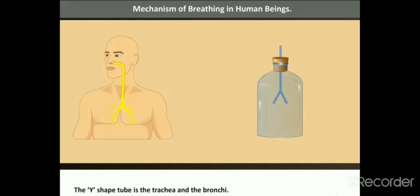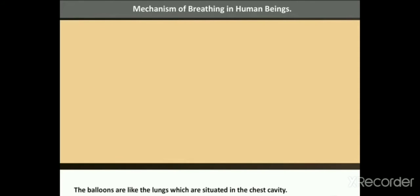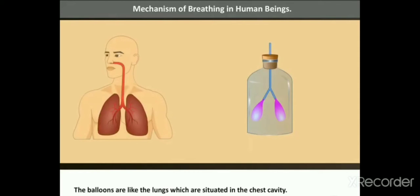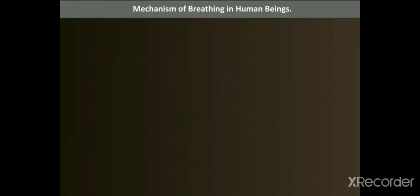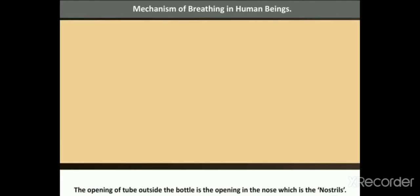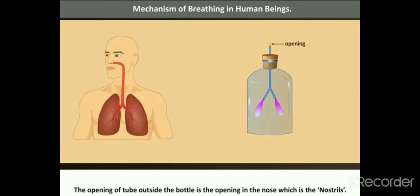The Y-shaped tube is the trachea and the bronchi. The balloons are like the lungs which are situated in the chest cavity. Now let us see what happens in our body. The opening of tube outside the bottle is the opening in the nose which is the nostrils.